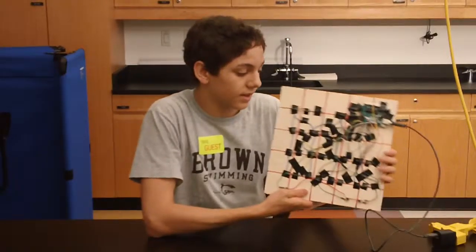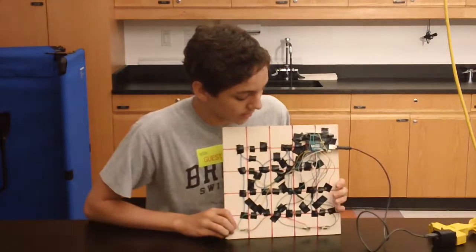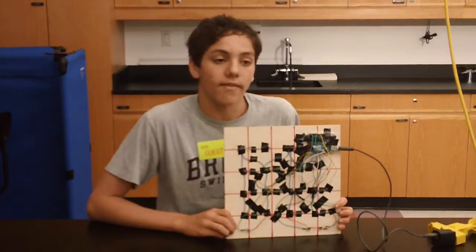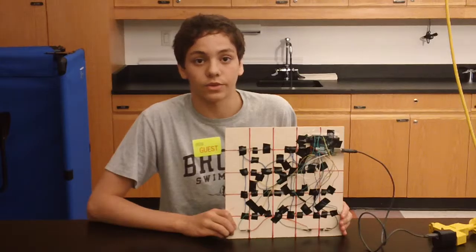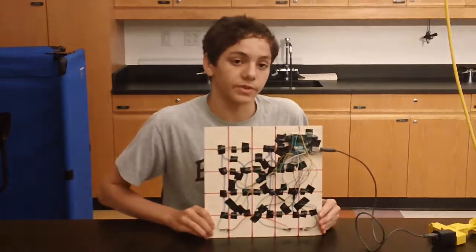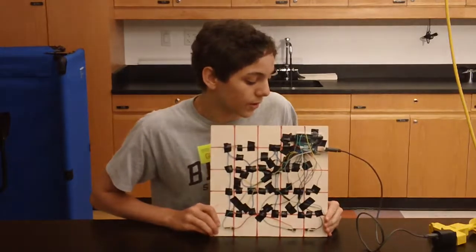And then I soldered all the negative leads of the LEDs to ground, and I soldered the positive lead of each LED to a 220-ohm resistor, and then from the resistor to the according port of the Arduino Uno.